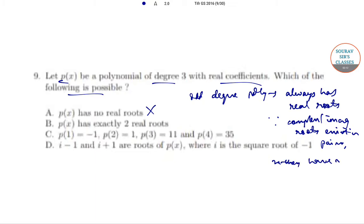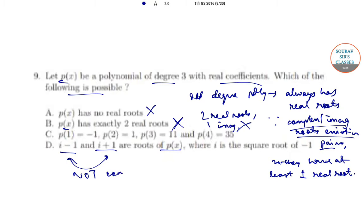They have at least one real root. Option B: p(x) has exactly two real roots. This is again incorrect because if it has two real roots, it will have one imaginary, and this is not possible since complex roots exist in pairs. Now checking option D: i minus 1 and i plus 1 are the roots of p(x), where i is the square root of minus 1. Now i minus 1 and i plus 1 are not conjugates of each other. Do not misread this as 1 plus i and 1 minus i. So by elimination, option C is the correct answer.